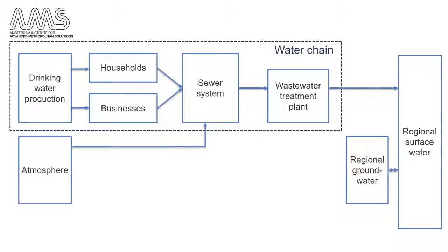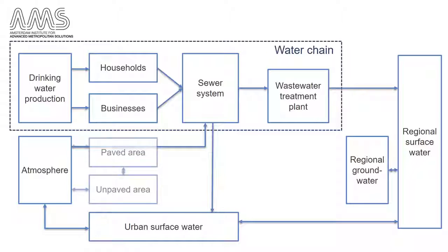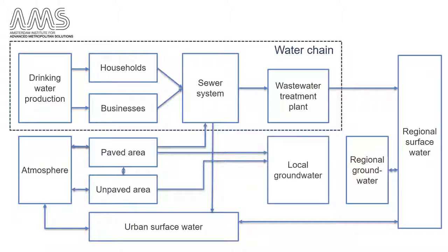Storm water could flow to the wastewater treatment plant via a combined sewer system, or it could flow into the urban surface water via storm sewers. In a combined sewer system, part of the wastewater can escape from the sewer system during heavy rainstorms. Such combined sewer overflows end up in the surface water and heavily pollute them. Part of the storm water runs off, however, and another part infiltrates into the urban soil on unpaved and permeable paved surfaces, and thus feeds the groundwater.